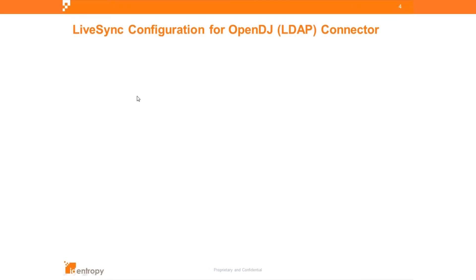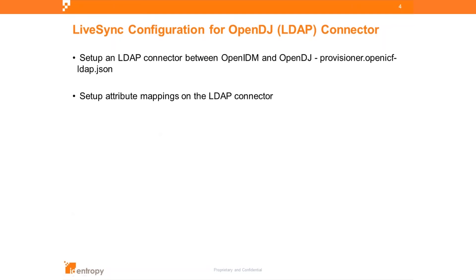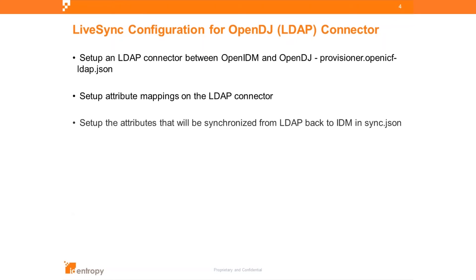The LiveSync configuration for LDAP involves basically three main files. There is the scheduler.json, where you set up how frequently you want the system polled. Then there is the provisioner file where you configure the LDAP connector — setting up your connection, connection pooling, and what attributes in LDAP you want the connector to manage. There is also a set of attribute mappings on the LDAP connector. For example, you might call an attribute 'given name' in your OpenDJ schema and map it to 'first name' — an abstracted representation of the attributes your OpenDJ schema contains.